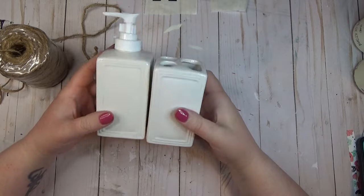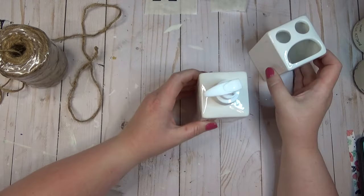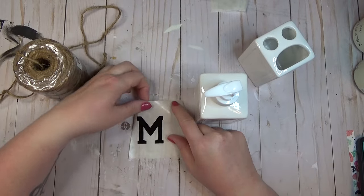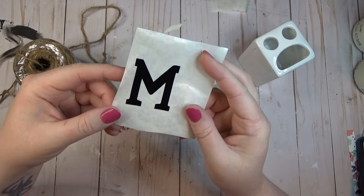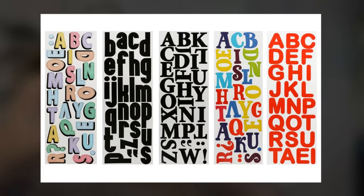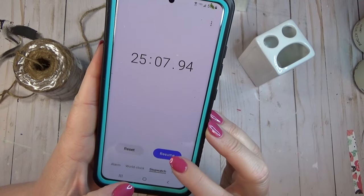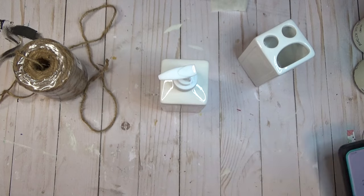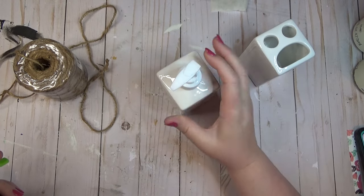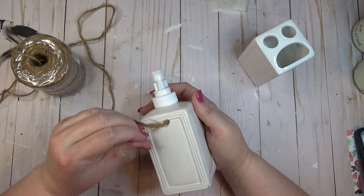Moving on to the soap dispenser and toothbrush holder — I picked these up at the Dollar Tree and they actually look really nice on their own, but I wanted to personalize them. I cut the letter M on my Cricut because that's what my last name starts with, but I'd recommend picking up poster stickers from the Dollar Tree instead. I didn't include the Cricut cut time in my crafting time because had I had the poster stickers, I would have just been able to peel them off.